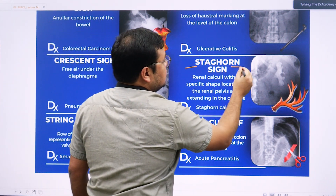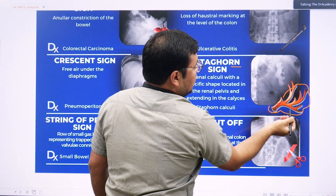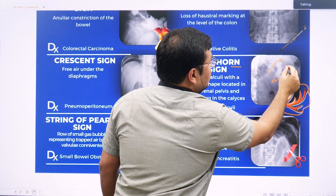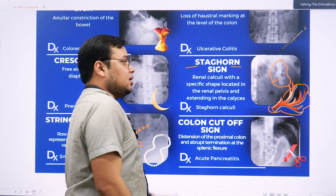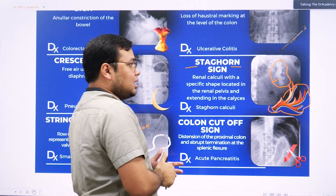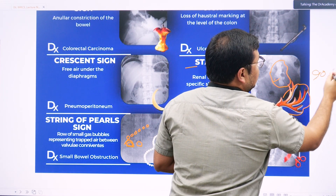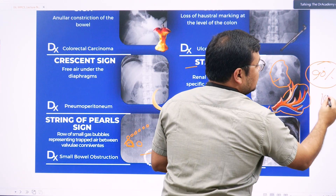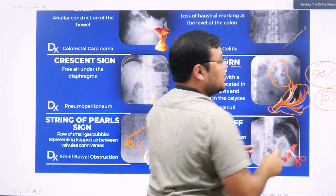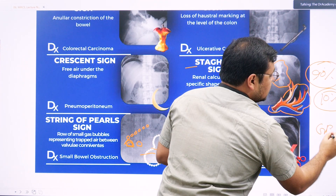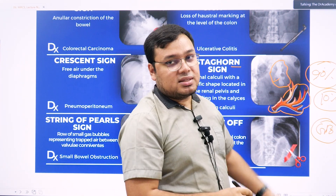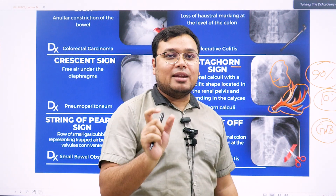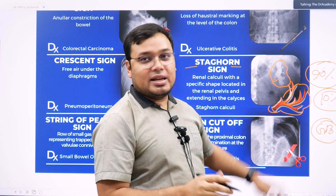The staghorn sign looks like a deer's antlers and is found on the kidney — specifically a staghorn calculus in the kidney. Keep in mind: 90% of ureteric stones are visible on X-ray, and 10% are not. But for gallbladder stones, the proportion is reversed — only 10% of gallbladder stones can be seen on X-ray, and 90% cannot.